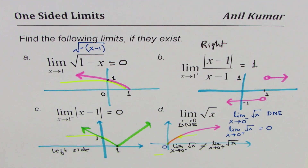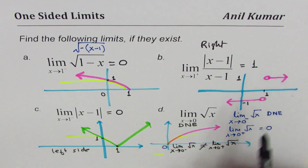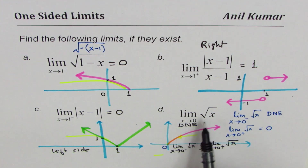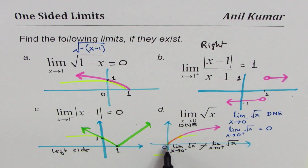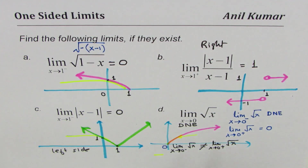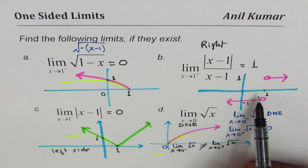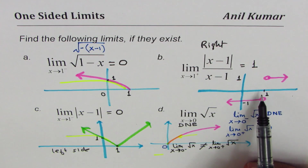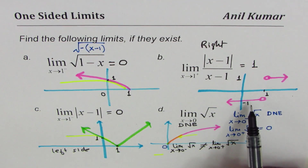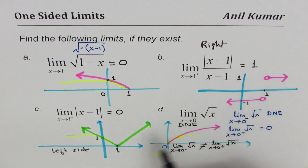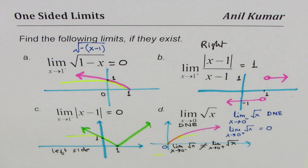What you've learned here: one-sided limits of a function may or may not exist. For example, for the square root function, approaching 0 from the left side doesn't exist. Also, the left side and right side limits may or may not be the same. Furthermore, the value of the function may be different from the limit of the function.